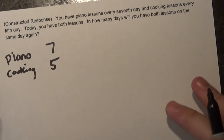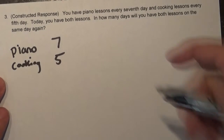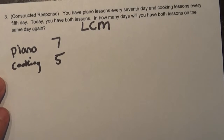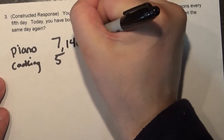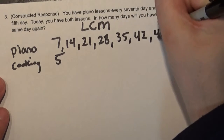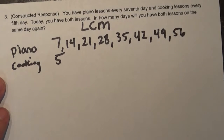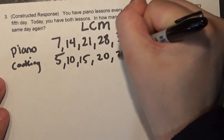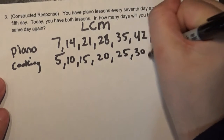Here we should be thinking about LCM — least common multiple. In order to find the least common multiple for seven and five, I write out my multiples of seven and five and try to find a pair that match up. Starting with piano: seven, 14, 21, 28, 35, 42, 49, 56. I could keep going, but I'll stop there. Then for cooking: five, 10, 15, 20, 25, 30, 35.